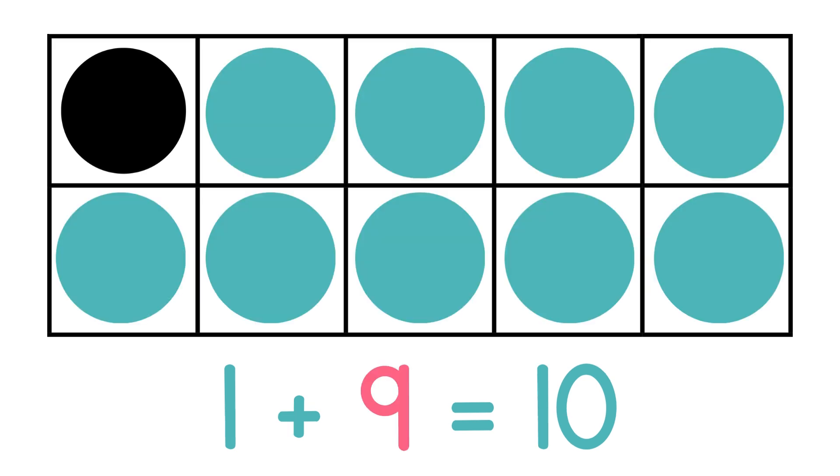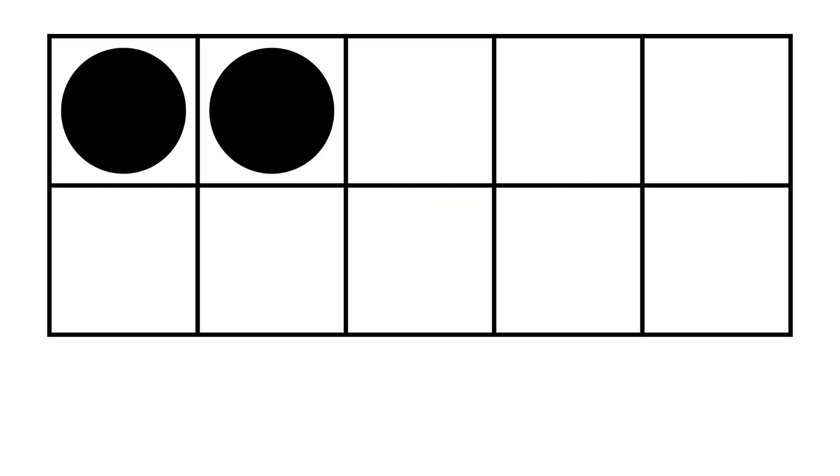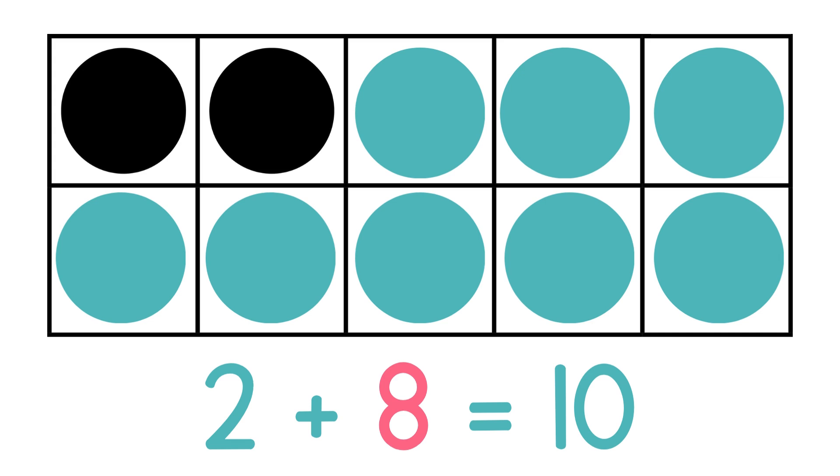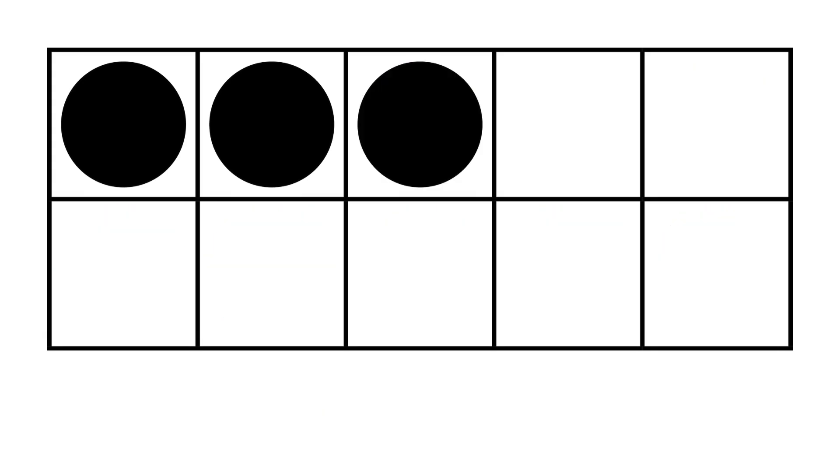Now we have two circles. Are you seeing the pattern? We have two circles, how many more circles do we need to get to 10? 2 plus what makes 10? 2 plus 8. And now we have three circles.